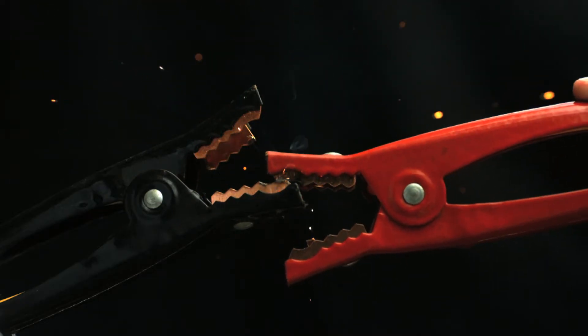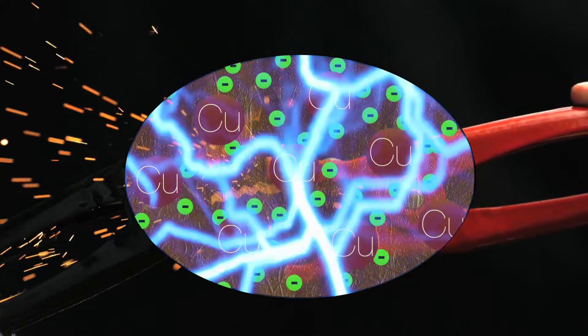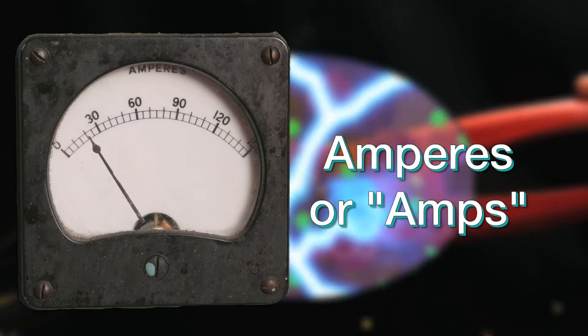Electricity comes from the flow of electrons in a single direction, referred to as an electrical current. Electrical currents are measured in amperes, commonly referred to as amps.